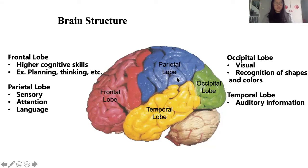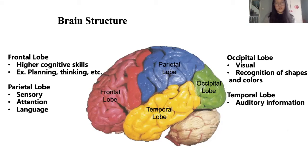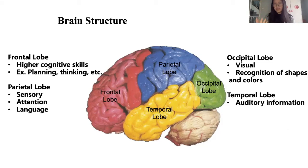The parietal lobe processes sensory information about attention and language; it's just behind the frontal lobe. I recommend taking notes as you learn this so you can review it later — it's really important for Brain Bee to understand where different lobes are located and what they do. The occipital lobe is for visual processing — it recognizes shapes and colors. Lastly, the temporal lobe processes auditory information; as you hear things, that information is processed in the temporal lobe.